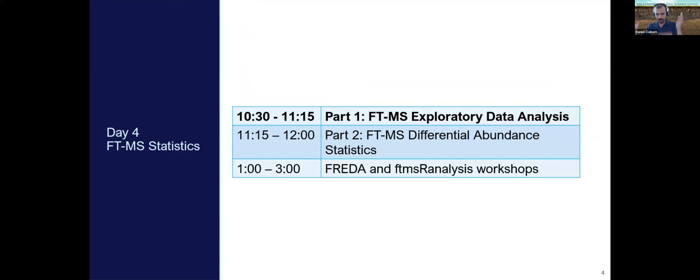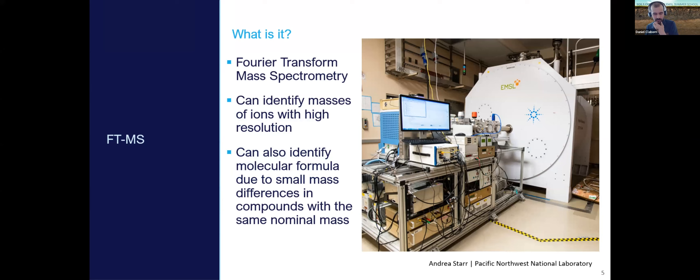So just to rebase on where we are: this is going to be the exploratory data analysis portion of analyzing this Fourier transform mass spectrometry data. After this talk, we're going to get into more formal analyses, specifically differential abundance. And later in the day, you'll get a chance to do it hands-on.